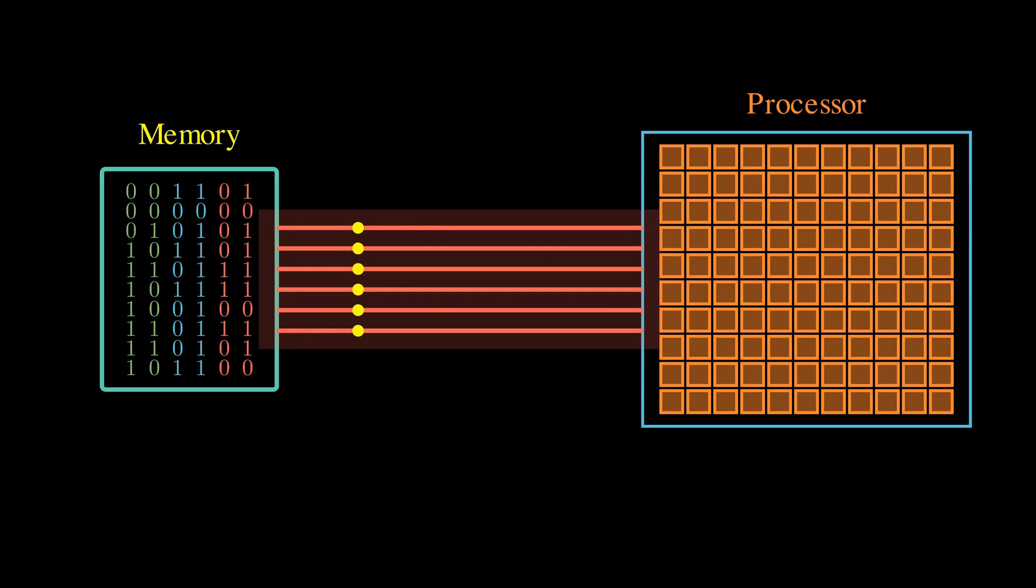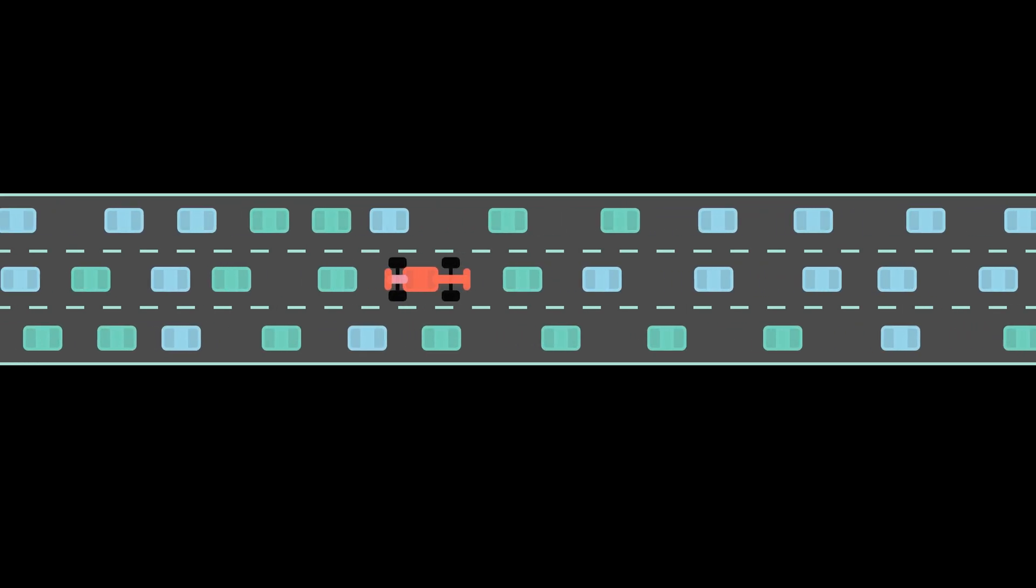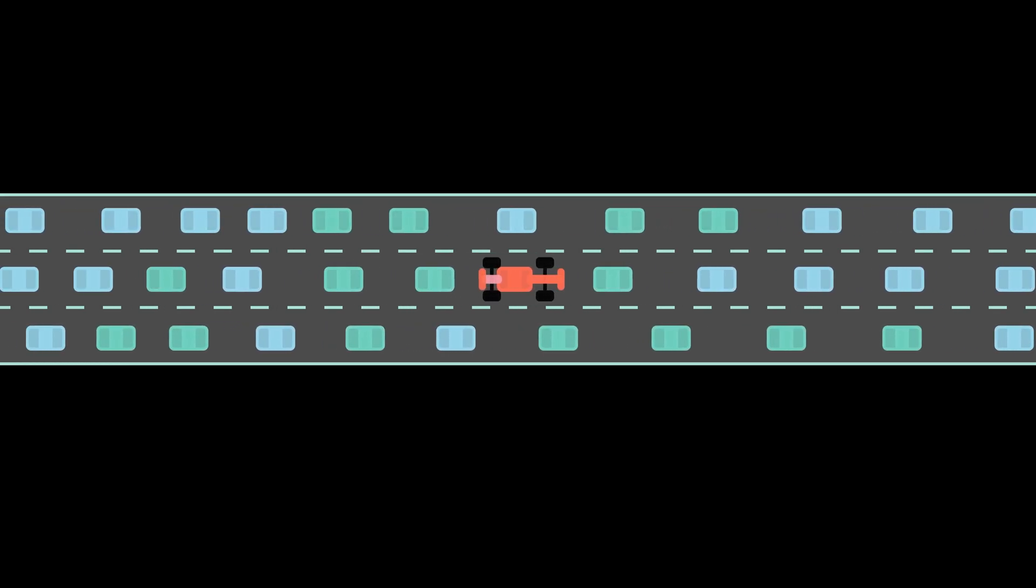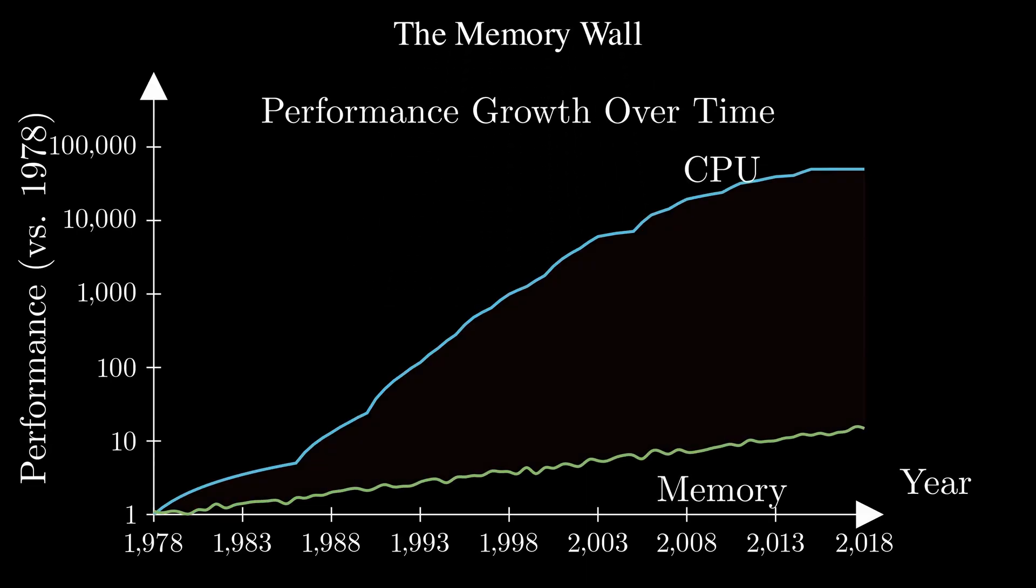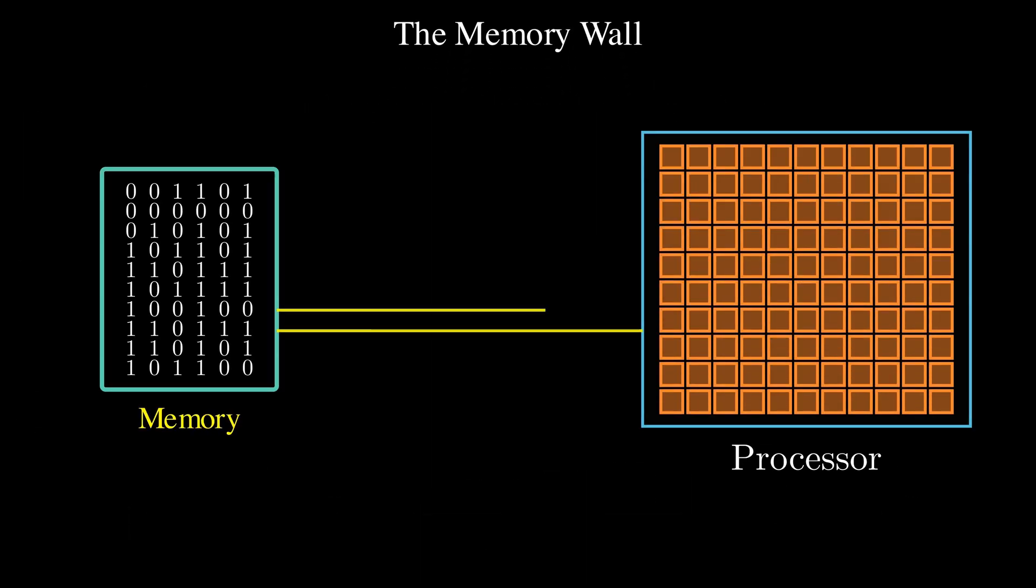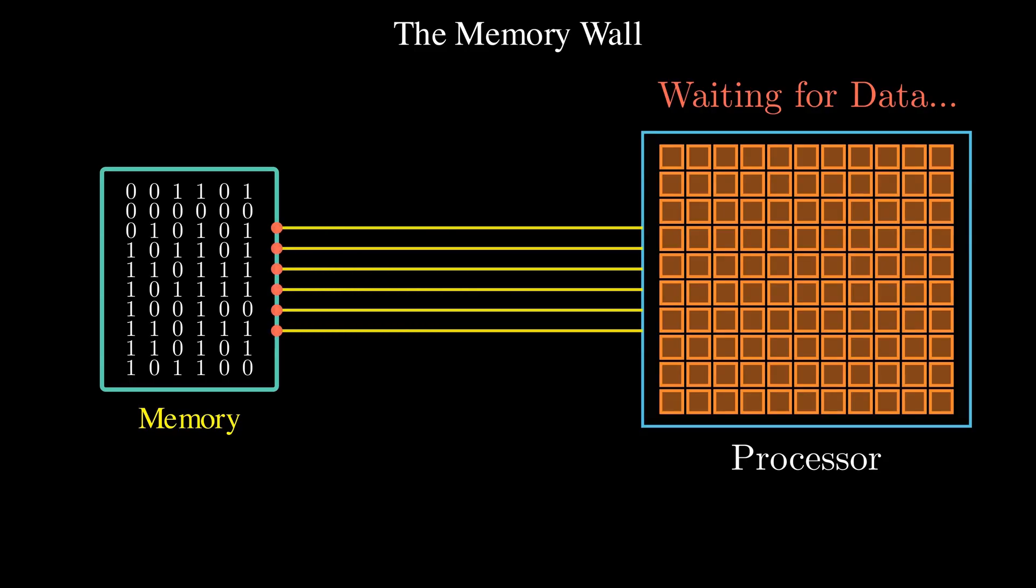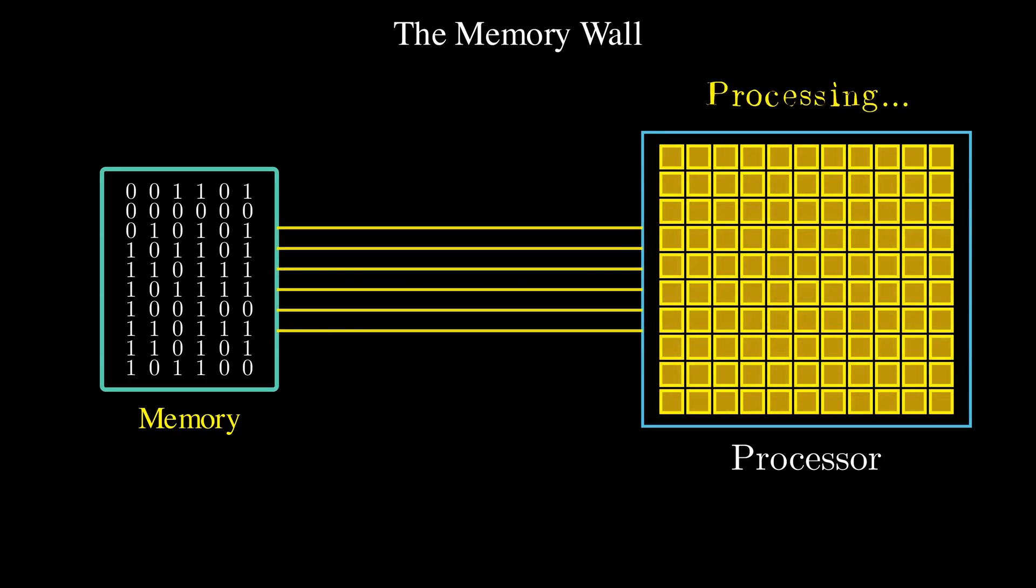As a result, even the mightiest GPU is ultimately held back by its slowest part: the memory bandwidth. It's like having a Formula One car stuck in traffic. This is known as the memory wall, a growing gap between memory and compute.